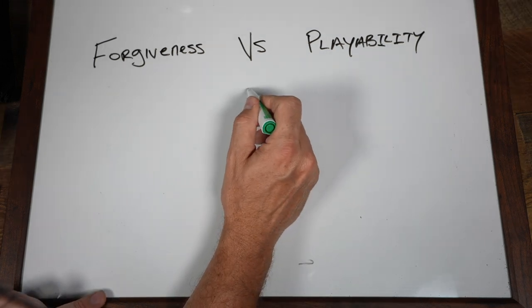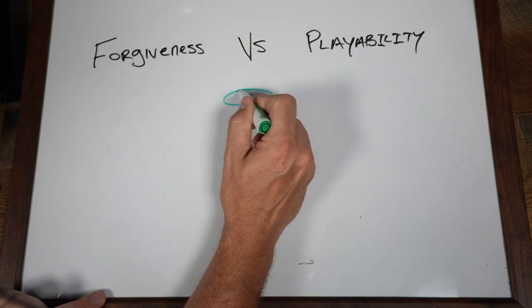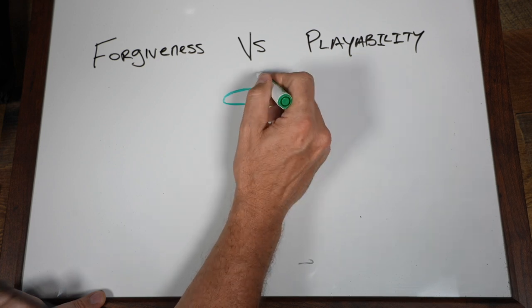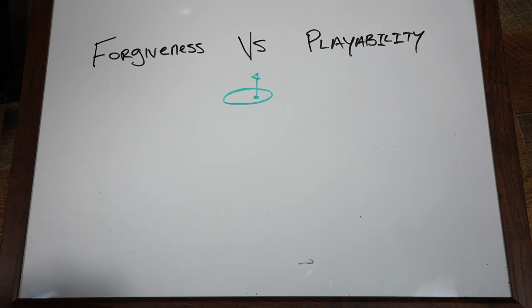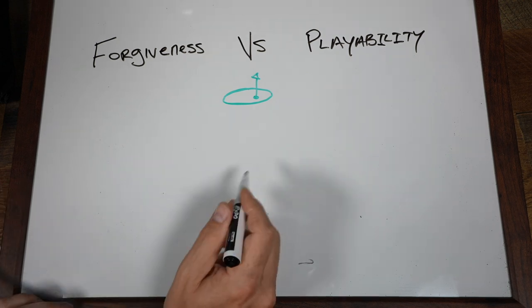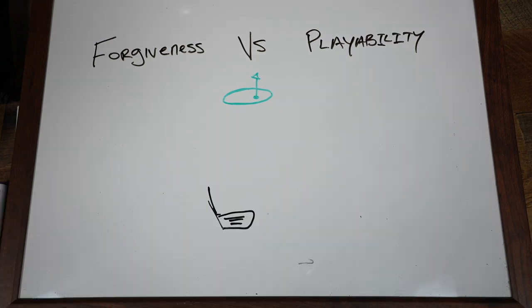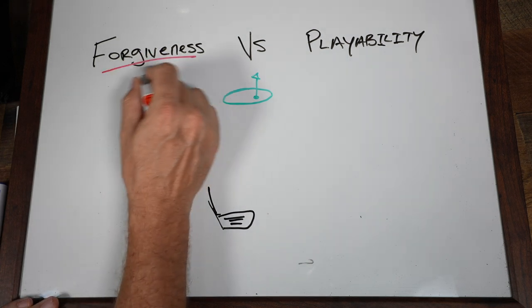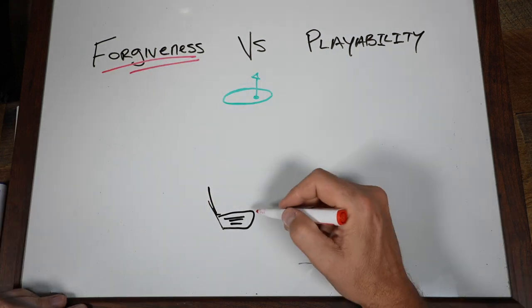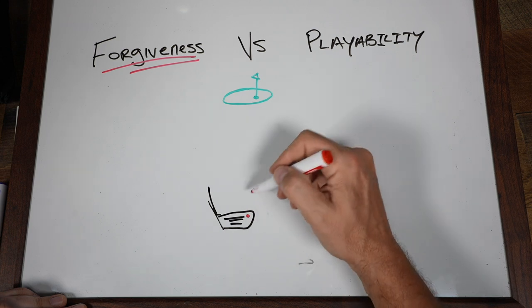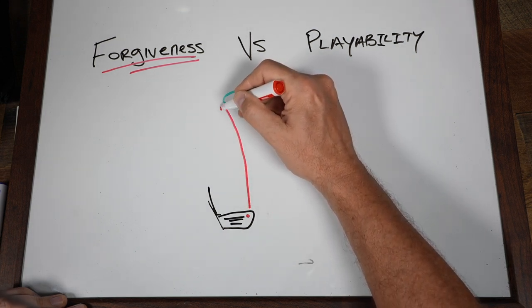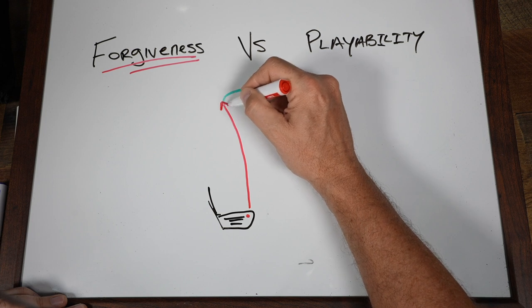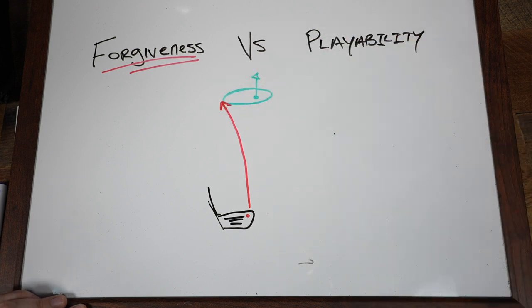The number one thing when it comes to playability in my mind is going to be actual workability. I'm going to draw a green here. Down here on the bottom we're going to have our golf club. Now when you've got a very forgiving club, you can hit that ball on the toe. You're still going to hit that ball probably a little left and you might come up a little bit short, but it won't be too bad.